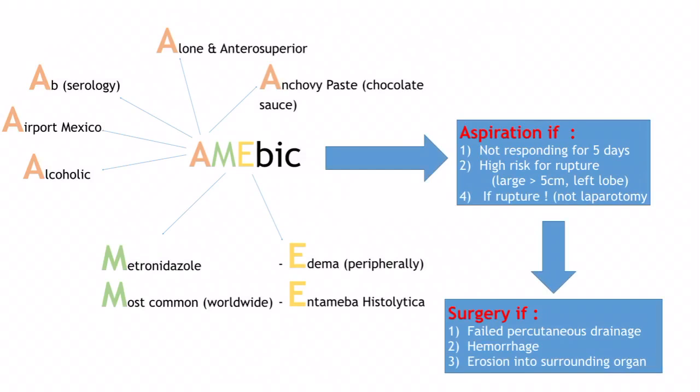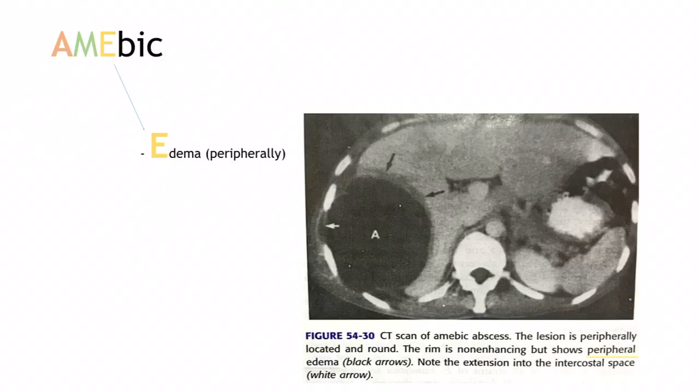Indications for surgery include failed percutaneous drainage, hemorrhage, or erosion into surrounding structures — not just rupture, but erosion. On the CT image shown, the black arrow demonstrates peripheral edema with a non-enhancing rim. Schwartz textbook mentions peripheral enhancement and edema, but Sabiston clearly shows a non-enhancing rim with peripheral edema.